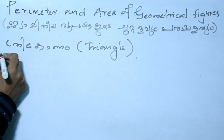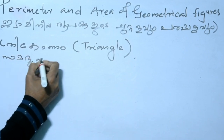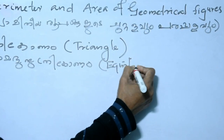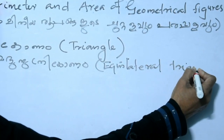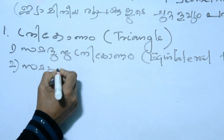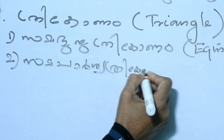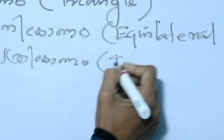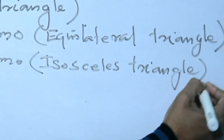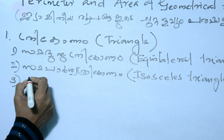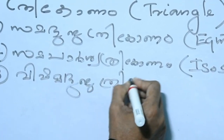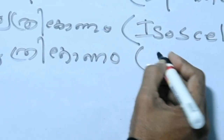The first is the Samafuja Trigone — that is the Equilateral Triangle. The third is the Vishama Fuja Trigone, that is the Scalene Triangle.